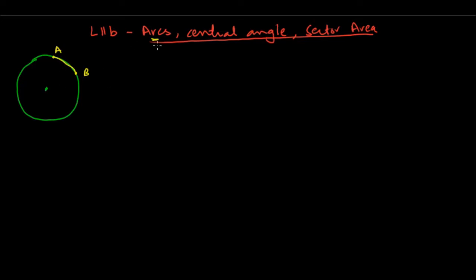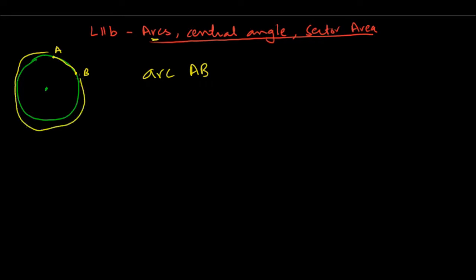Now the way you refer to an arc — you can't simply say arc AB, because that's confusing. Do you mean from A to B going this way, or do you mean going counterclockwise from A and coming to B like this? Do you mean the big arc, the longer arc, or the shorter one? That's confusing.